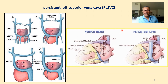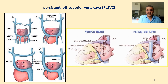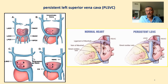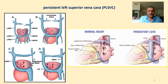The last indication where we use the bubble or agitated normal saline test is persistent left superior vena cava (PLSVC) anomaly. This anomaly is the most common venous — cardiac venous — anomaly in both pediatric and adult groups. In the adult general population, almost half a percent of people have this kind of anomaly.